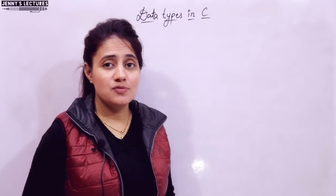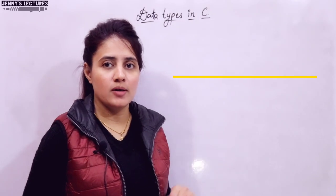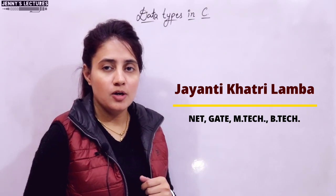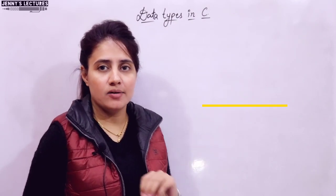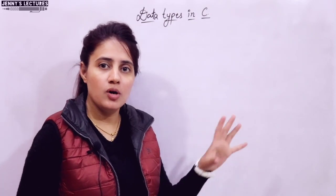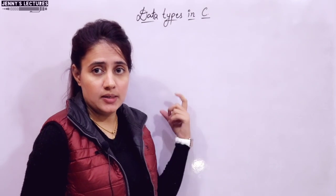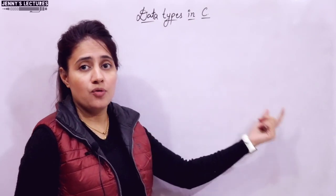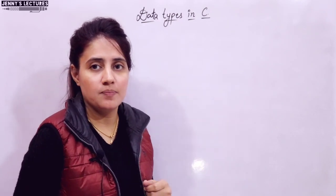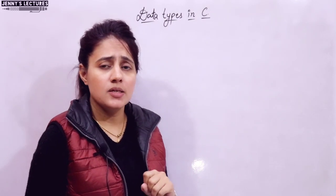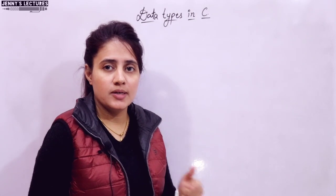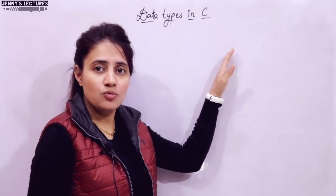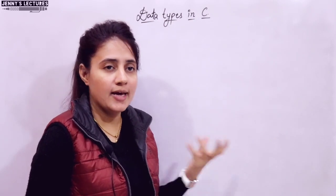In this series on learning programming in C, the previous video discussed data types — specifically primitive or built-in fundamental data types: int, float, void, double, and character. We discussed all those data types and drew a table showing storage size (1, 2, or 4 bytes), format specifier, and range. I've received questions in the comment box and on Instagram about why, when printing an int or character value, a different value is shown.